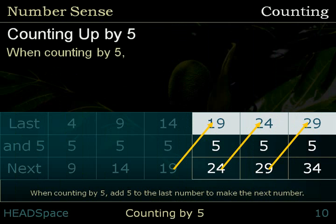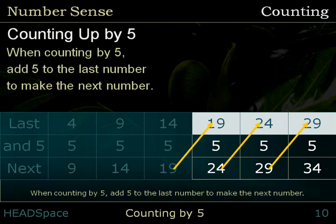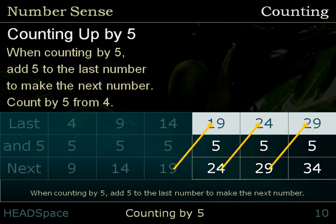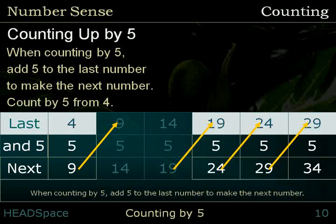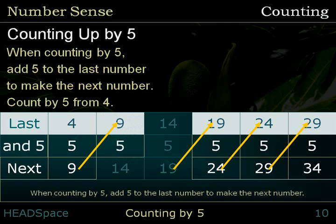When counting by 5, add 5 to the last number to make the next number. Count by 5 from 4. Last number: 4. And 5. Next number: 9. Last number: 9. And 5. Next number: 14. Last number: 14. And 5. Next number: 19.